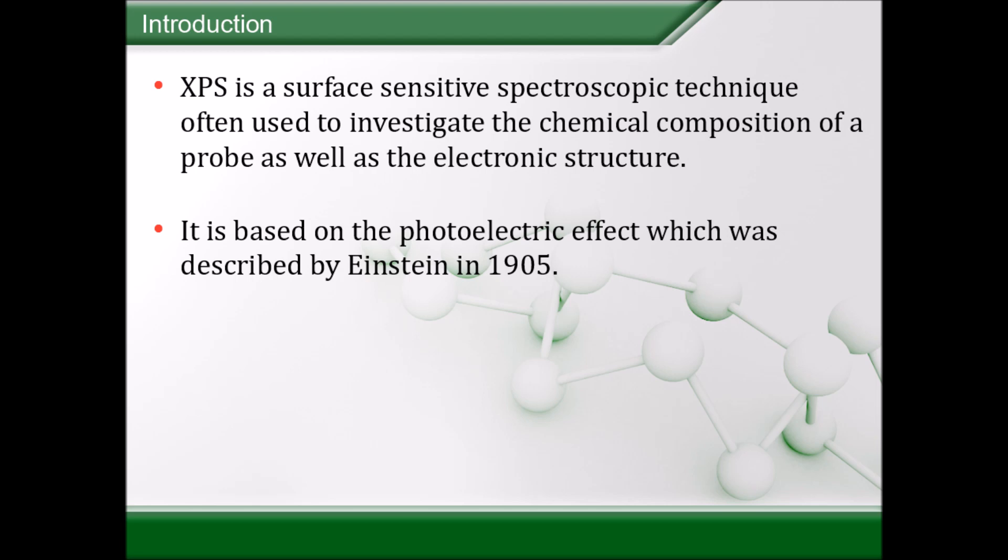X-ray photoelectron spectroscopy is a technique to analyze the structure of atoms and get information about electronic structure as well as ionization energies. It works by irradiating a sample with an X-ray beam and then quantifying the kinetic energy and number of electrons that are ejected from the material.